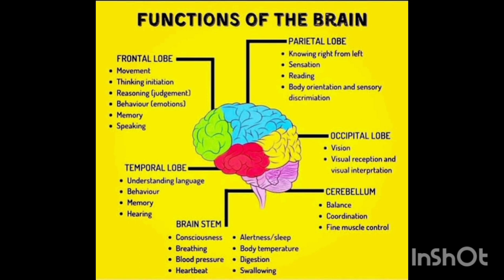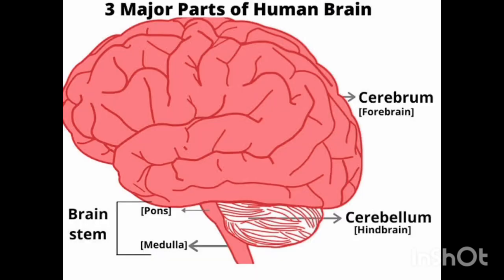The third and last part of the human brain is the brain stem, which gives rise to the spinal cord and plays an important role in consciousness, breathing, blood pressure control, heartbeat control, alertness, body temperature, digestion, swallowing, etc.